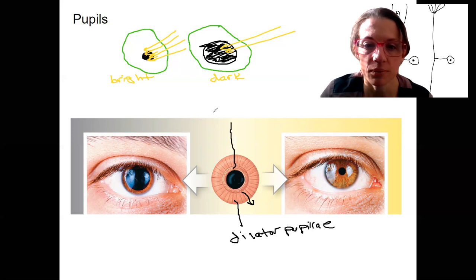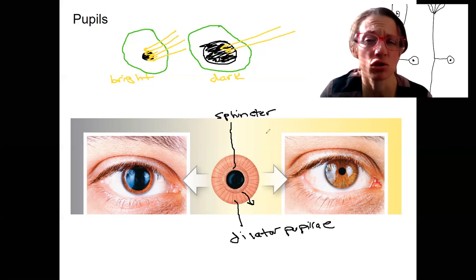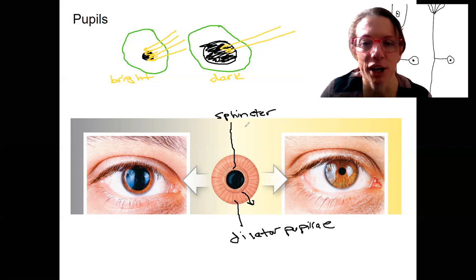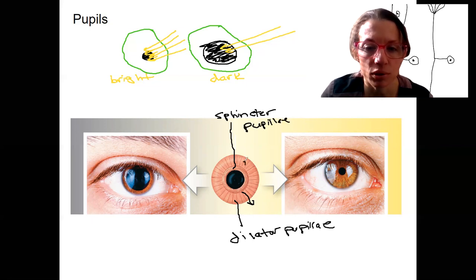This muscle here, this is our sphincter pupillae. Sphincters tend to constrict things. You have various sphincters in your body. This muscle, when it contracts, pulls this way and constricts the pupil to make it smaller.